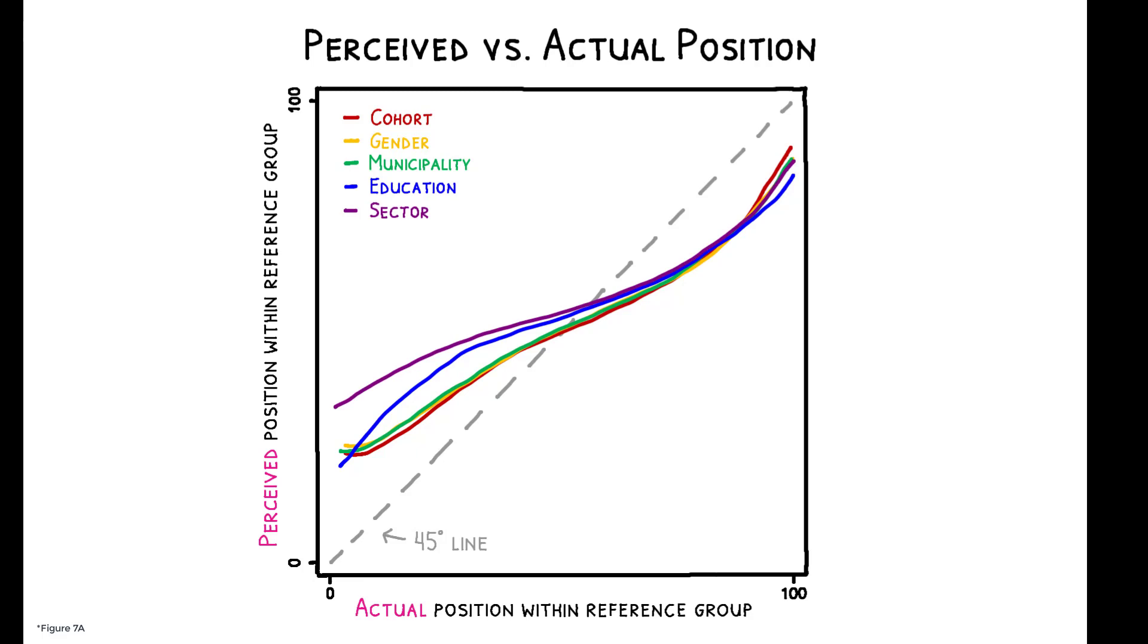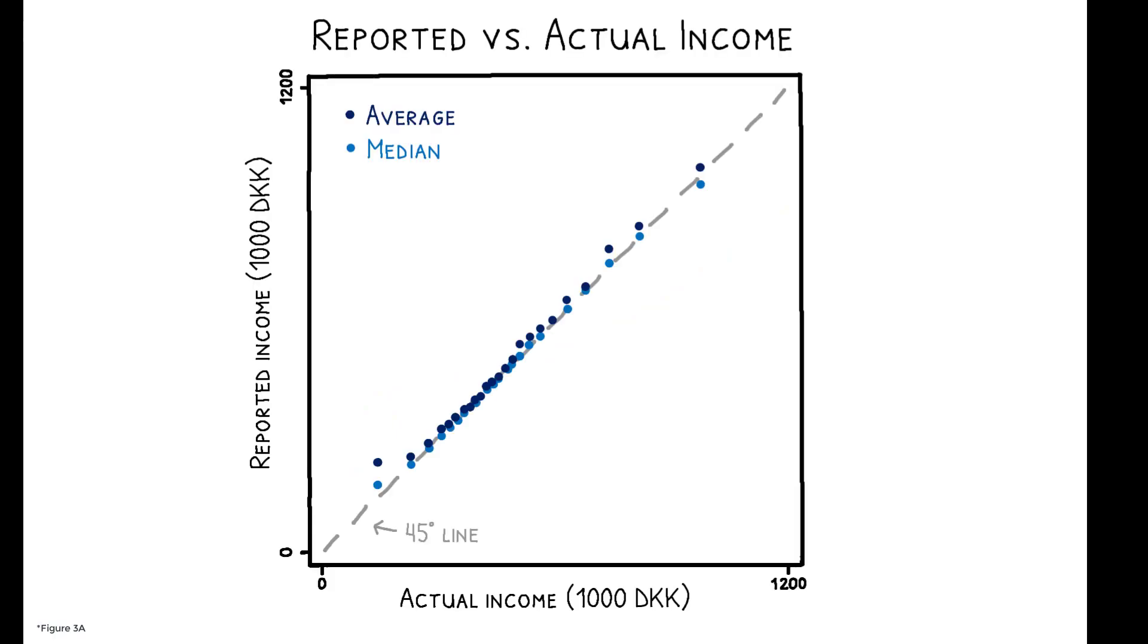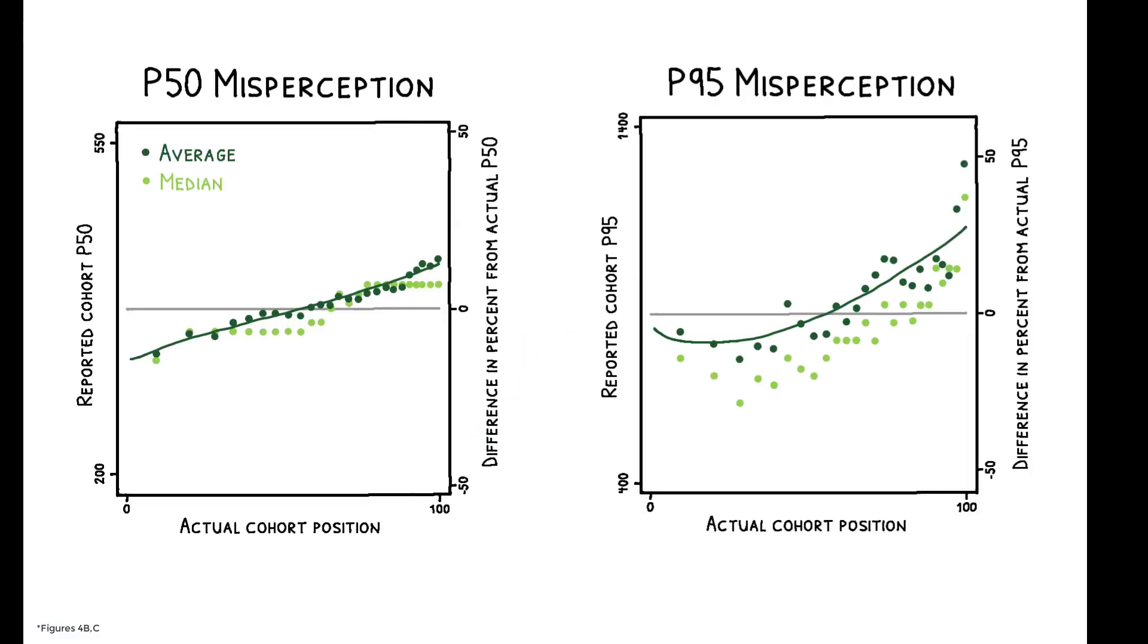To help explain this, note that survey respondents did not misperceive their own income. Reported income closely matches actual income from the administrative data. Rather, center bias arises because those with higher incomes tend to overestimate other people's incomes, while those with lower incomes tend to underestimate other people's incomes.